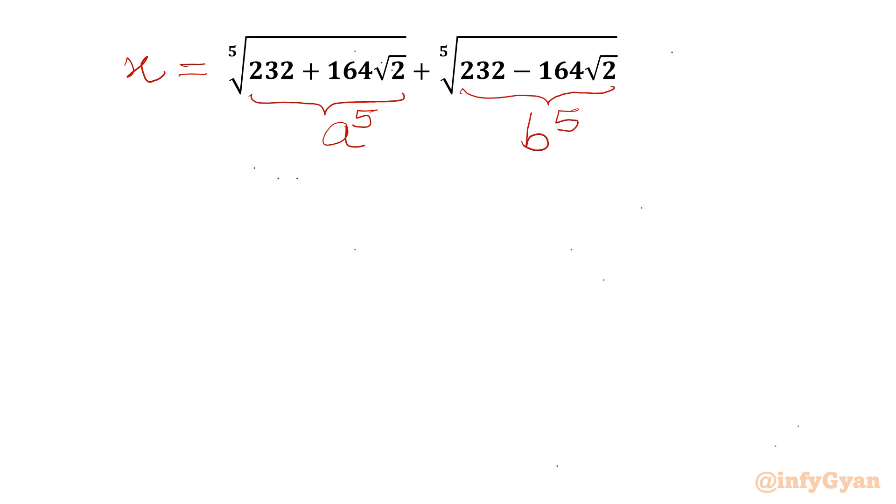So the very first equation which we can write after these substitutions: x will be equal to fifth root of a power 5, so a, plus fifth root of b power 5, so b. So we will consider a plus b equal to x. This will be our first equation.